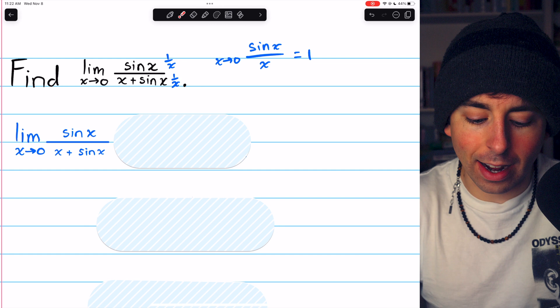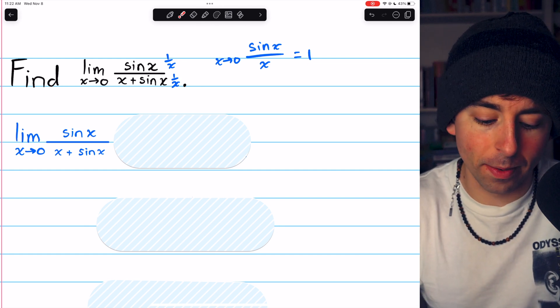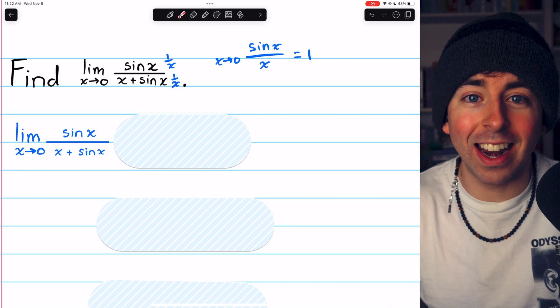because then we'll have sine x over x, which we know is one, we'll have x over x, which is one, and sine x over x, which again is one.